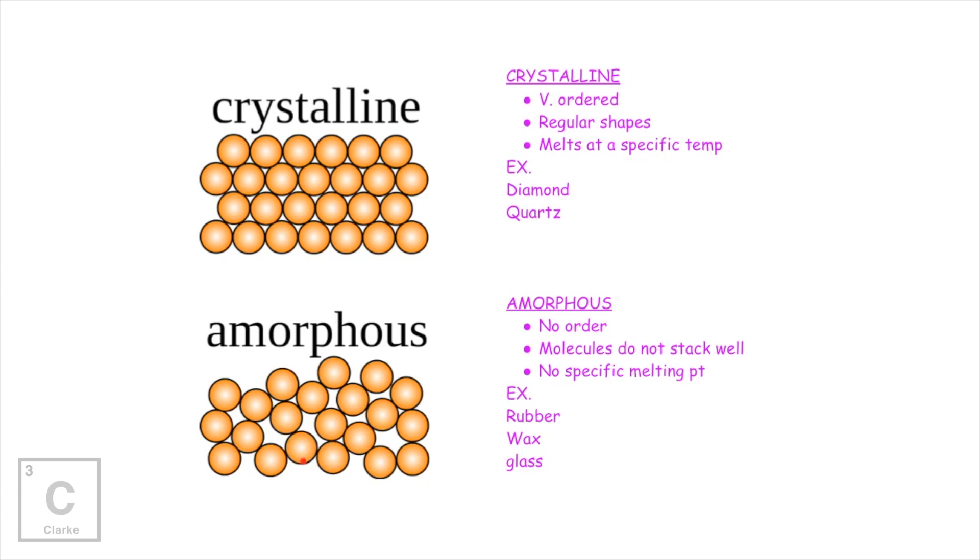If we look at amorphous, you see, again, there's no order, there's no shape. It's just kind of a random jumble. So amorphous, we say it has no order. The molecules don't stack very well. If they stack very well, then they're going to make crystal shapes. Since the order is pretty random, it has no specific melting point. It's going to start melting and getting soft over a wide range of temperatures. Some good examples of that would be rubber, wax, and then there's the glass again.